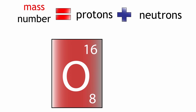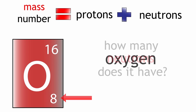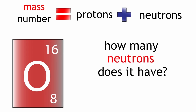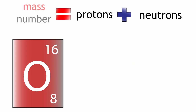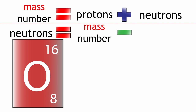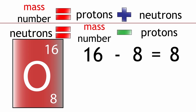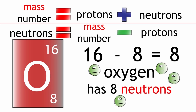So if we take oxygen — oxygen has a mass number of 16 and has 8 protons. But how many neutrons does it have? Remember, mass number equals protons plus neutrons. We can rearrange this to show that neutrons equals mass number minus protons. Neutrons equals 16 minus 8 equals 8. Oxygen therefore has 8 neutrons.